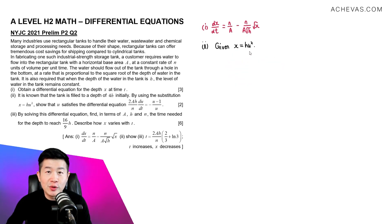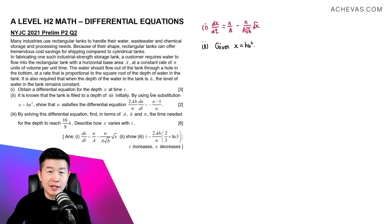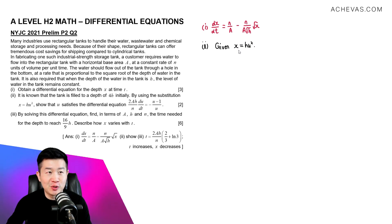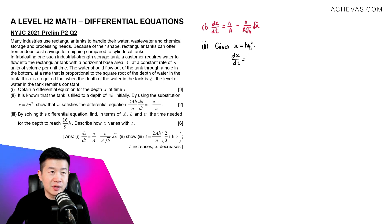We are given that x = hu², and we are supposed to substitute this to replace all the x in the equation, giving us a new differential equation in terms of u. So this x is replaced by hu². To find a representation for dx/dt, we differentiate x = hu² with respect to t. On the left-hand side we get dx/dt, and on the right-hand side we will get a representation to substitute back in.